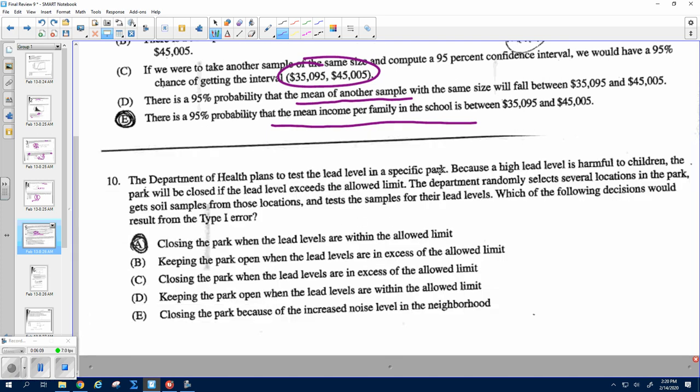Alright, so type 1, type 2 errors. You definitely need to know these. So our null hypothesis in this case is basically we have a safe level of lead. Okay, our alternate hypothesis is that it's above a safe level. Alright, so then we'd have to close down the park.